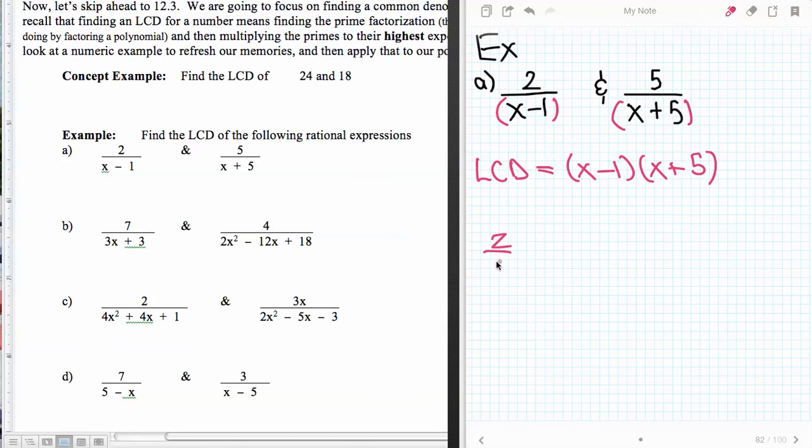So if I were to have 2 thirds and 1 half, the least common denominator for 2 thirds and 1 half, because these are primes, the LCD of these things is just 3 times 2. And that's exactly what we're saying up here. It's just this prime number times this prime number, and that's my least common denominator.